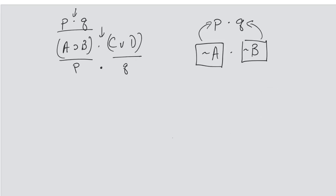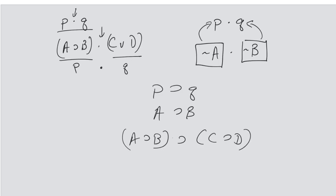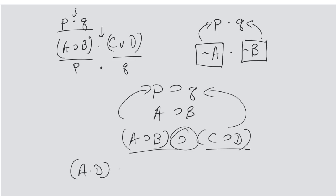If I have a simple horseshoe statement P therefore Q, I could have A therefore B, or I could have A therefore B therefore C therefore D. This is also just a substitution instance of that horseshoe statement, with the main connective being the horseshoe. I can have 'A and D therefore R or S' — it doesn't matter. You can think of this as P and this as Q, connected by a horseshoe. So a substitution instance means that when looking at rules of inference, they're presented as variables.